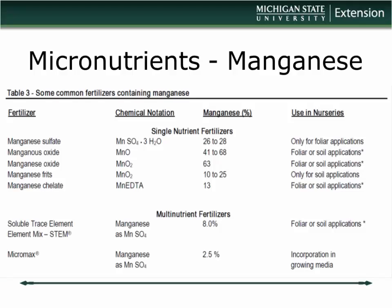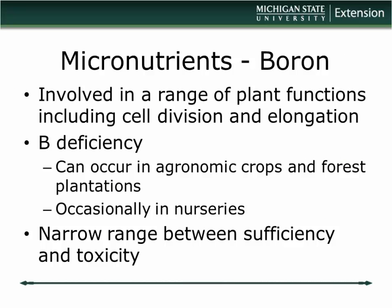You can occasionally address manganese deficiency by applying manganese, either as part of a micronutrient mix like Micromax or as a direct application, but the better approach is usually to try to adjust the pH problem — add sulfur or fertilize with ammonium sulfate to try to drive the pH down.